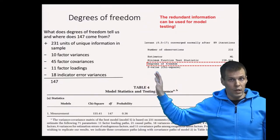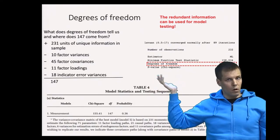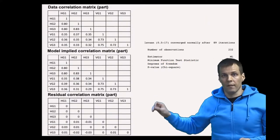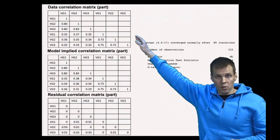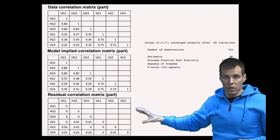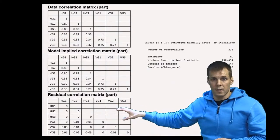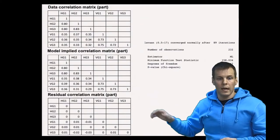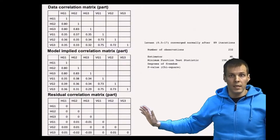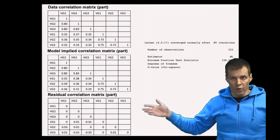We have more information than we need for model estimation. We can ask whether the additional information is consistent with our estimates. So we have the data correlation matrix, the implied correlation matrix, and the residual correlation matrix. The estimation criterion was to make the residual correlation matrix as close to all zeros as possible by adjusting the model parameters. These residuals are pretty close to zero. If the model fits perfectly, it reproduces the data perfectly and residuals are zero.